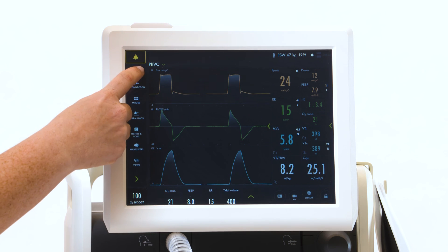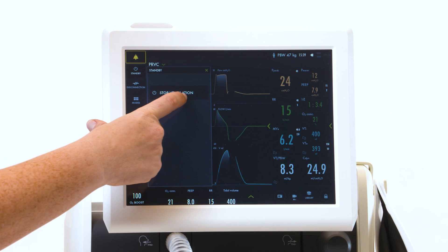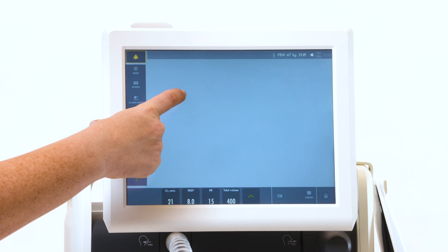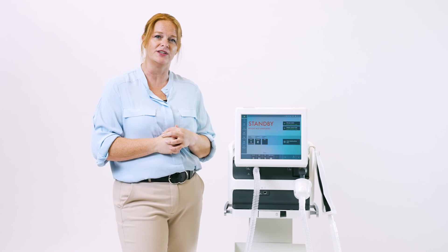To stop ventilation and go into standby, touch standby and then touch and hold stop ventilation till the blue bar goes across. Now you can switch into non-invasive ventilation if you would like.